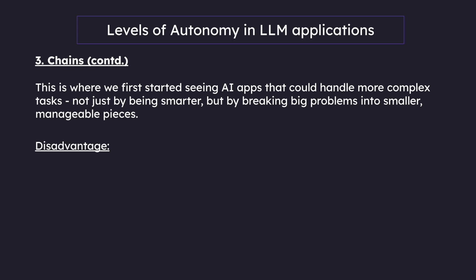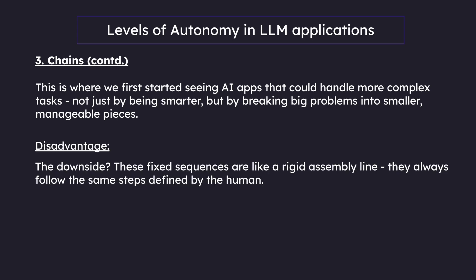What are the disadvantages of chains? The downside is that these fixed sequences are like a rigid assembly line — they always follow the same steps defined by the human.